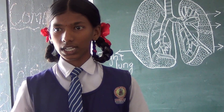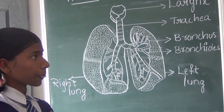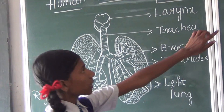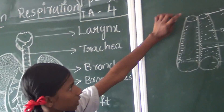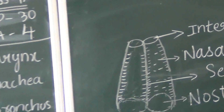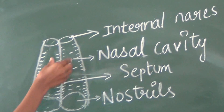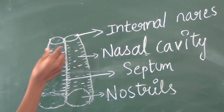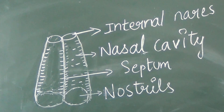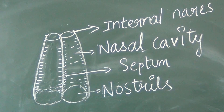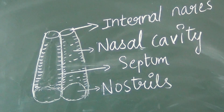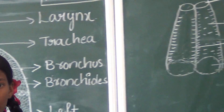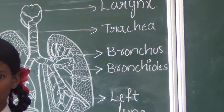Then it enters into lungs. Then coming to internal nose. These nasal cavities open into the internal nose. They are the small holes which open into pharynx.